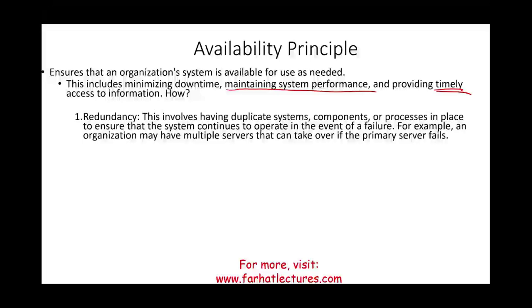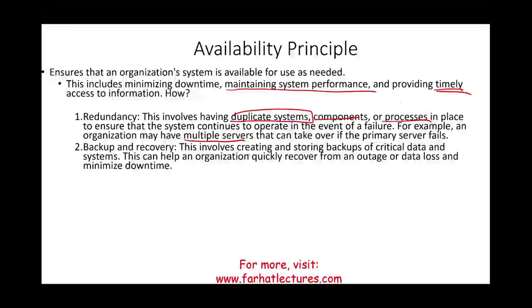To ensure the availability principle is in action, organizations use redundancy — duplicate systems, components, or processes — so that if one thing fails, a duplicate system can be brought online immediately. For example, an organization could have multiple servers so that if one server fails, another can be launched almost immediately to keep the business running.